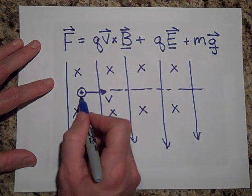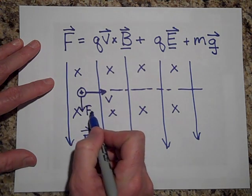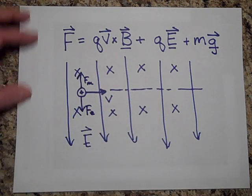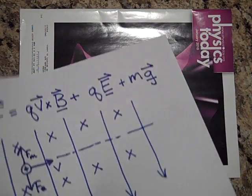You'll have an electric force Fe and you'll have a magnetic force. If they balance out, then the particle will go straight through. Let's take a look at that.